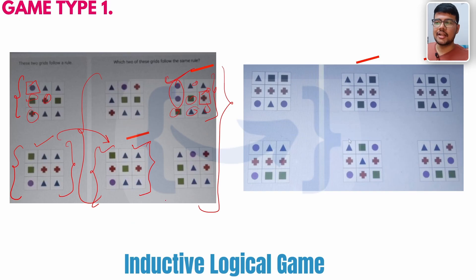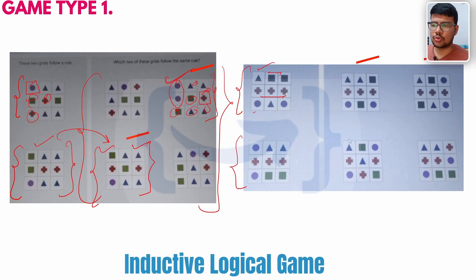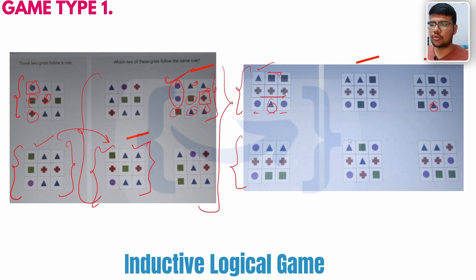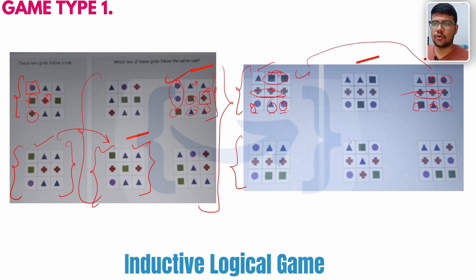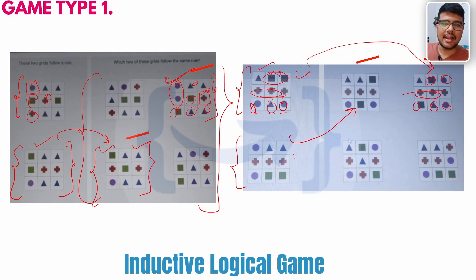These questions are multi-select, so do select multiple options. Now let's look at this particular picture using the same analogy. We have one triangle, two boxes, three plus signs, two squares, two circles, and one triangle. Following the same analogy: one triangle here, one triangle there; two plus or two squares here, two squares there; three plus, three plus; two circles, two circles. So yes, this is the answer we are looking for — I have already marked it.